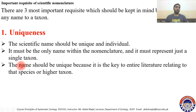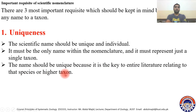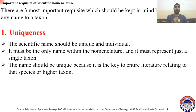The name should be unique because it is the key to the entire literature relating to its species or higher taxon. For example, dog is the vernacular or common name, but the scientific name is Canis familiaris. The taxon name familiaris is unique in the whole zoological nomenclature, as it is a key to the entire literature relating to the species of dog.